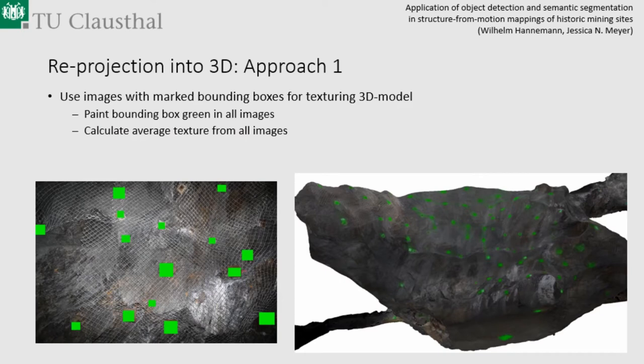Until now we only had 2D bounding boxes in the images, but we want to get 3D information. As a simple, fast approach, we colored the images green at the bounding box locations and used that as a texture in PhotoScan. The result, shown on the right side, is a heat map — the greener the area, the more images have a bounding box there — giving a visual representation of the spatial distribution of these objects.